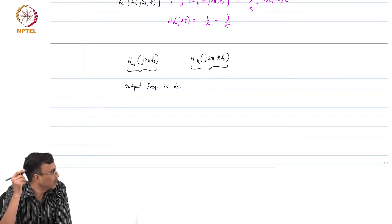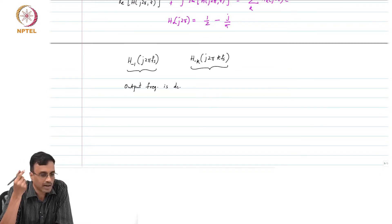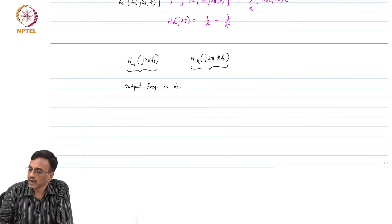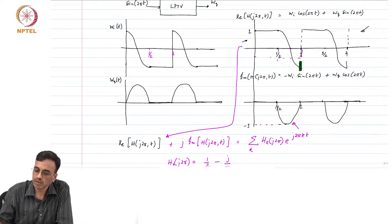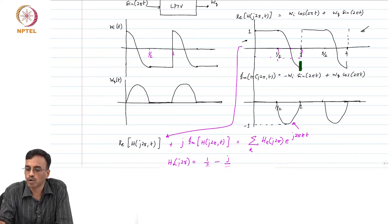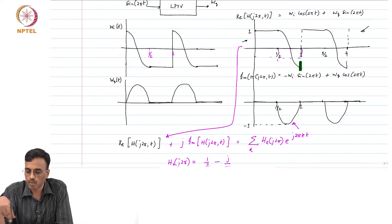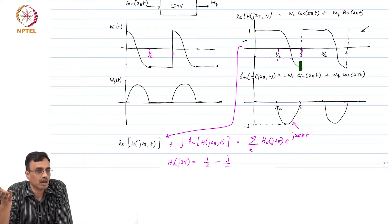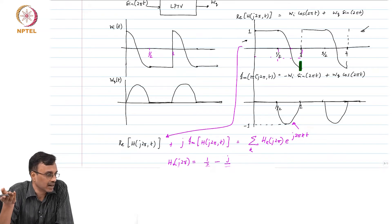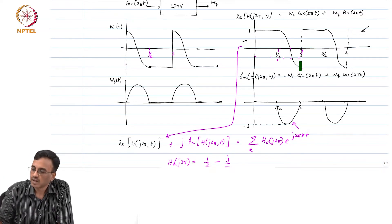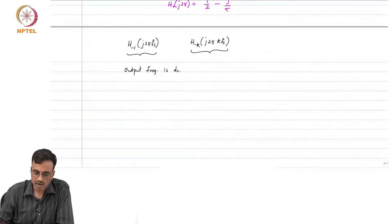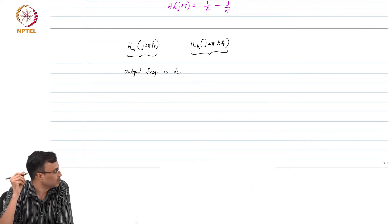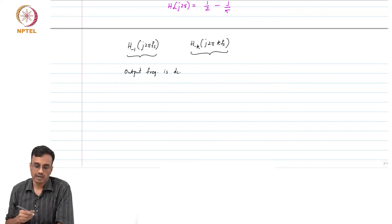In these cases, there is a trick you can use. You do not really need to find W_i and W_q, plot the real and imaginary parts, do the Fourier series, and find the relevant Fourier components. It turns out there is a shortcut.